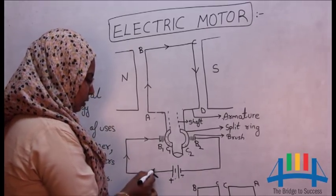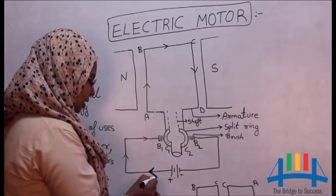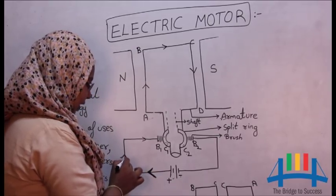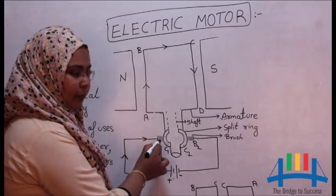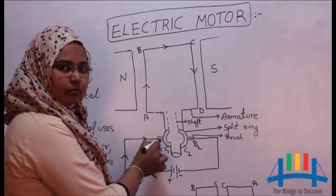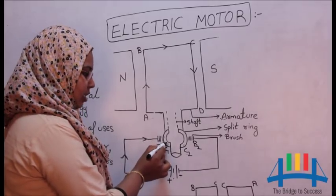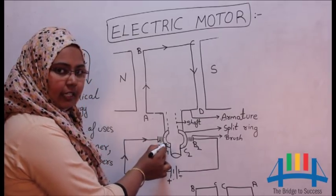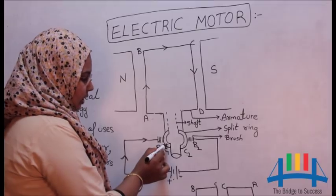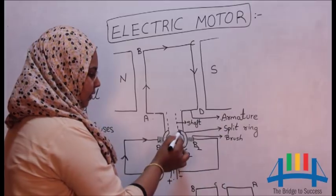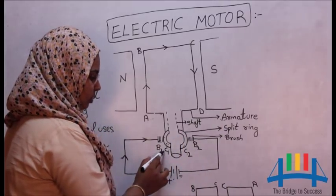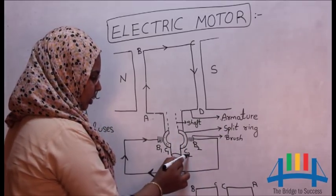As you can see here, the direction of current is from positive. It's entering here and then it enters the brush B1. Brush is a hairy structure which keeps touching the solid thing which comes near it. Here the solid thing is split ring. We call it a split ring because the ring is not complete. We have two such rings, C1 and C2.